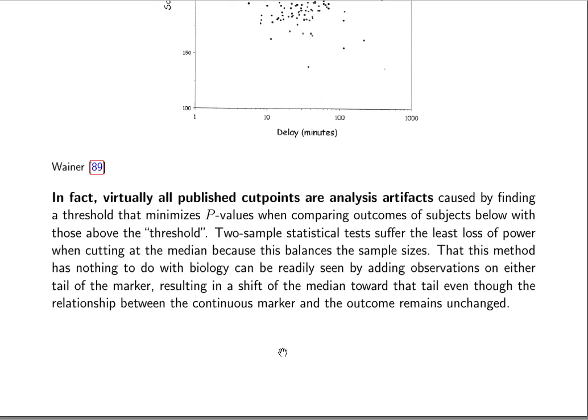So almost all published cut points are actually analysis artifacts. And so an interesting paper studied this in a fairly unique way and studied biomarkers in cardiology, and cut points for biomarkers are frequently sought by finding a cut point that minimizes a p-value or maximizes a t- or chi-square statistic.